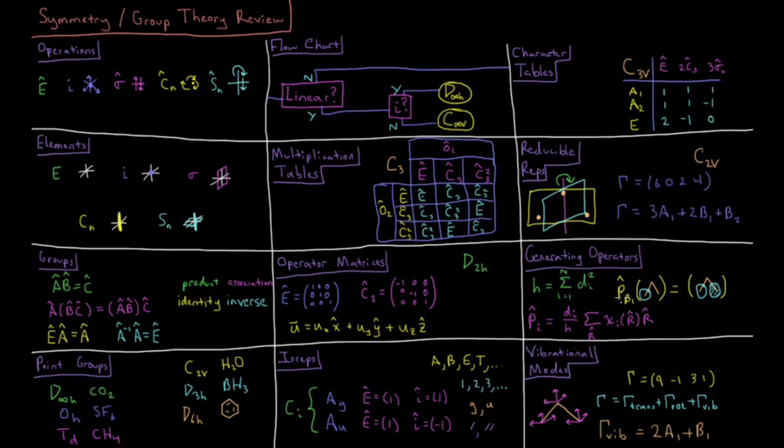if I use the generating operator for the B1 irrep in the C2V point group for water, I can take the 1s orbital on the hydrogen, apply this generating operator and get that the B1 representation of this particular orbital ends up being an anti-symmetric combination of the two 1s orbitals on these hydrogens. So these are useful for generating specific symmetry-adapted linear combinations of various objects that we're interested in, like orbitals.